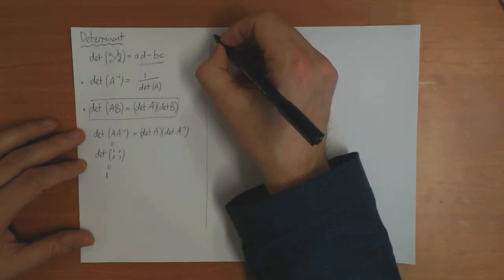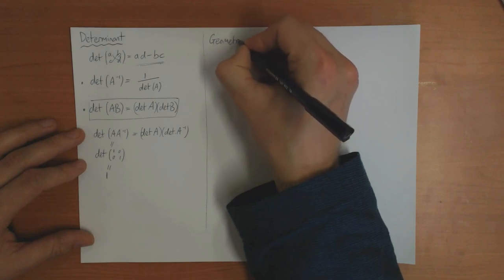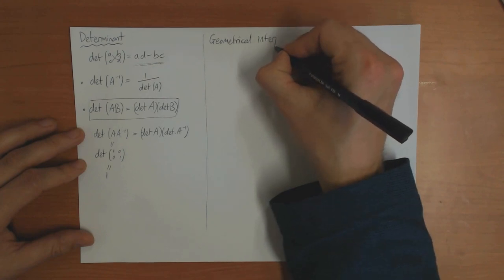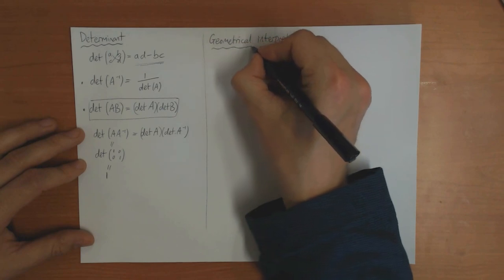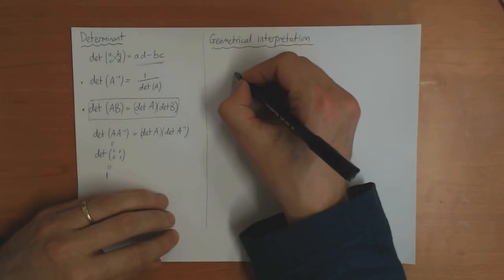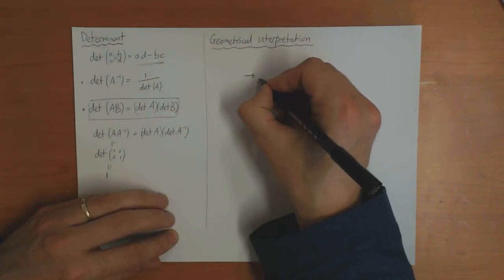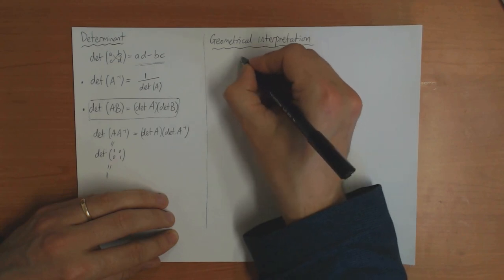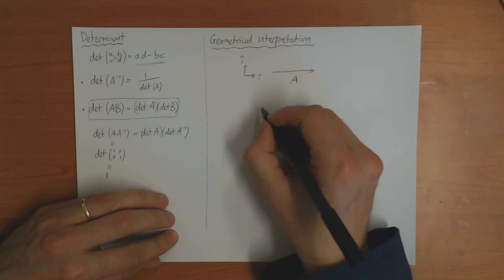I want to finish by giving you a geometrical interpretation of the determinant. To do this, I want to consider two dimensions. We've got a basis here, I and J, and what happens to this basis if we apply the matrix A?